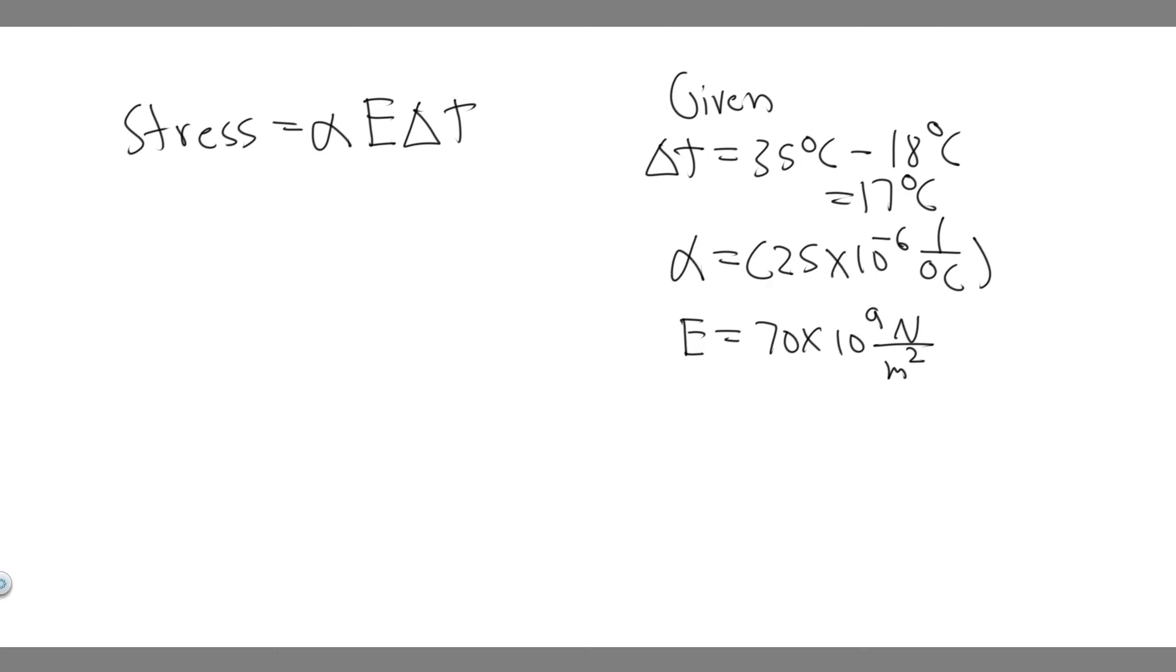E is basically what is known as Young's modulus. It's different for every material, just like the coefficient of thermal expansion. In this case, for aluminum, it's 70 times 10 to the 9 Newton meters squared. So that's going to be this value.